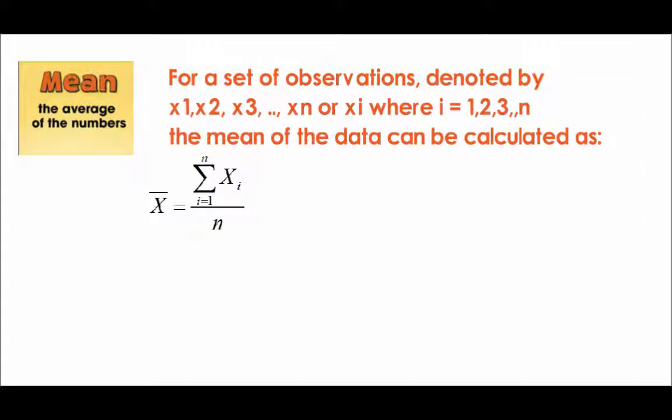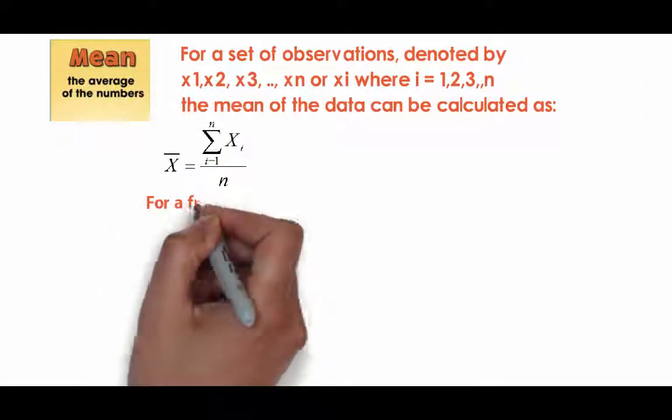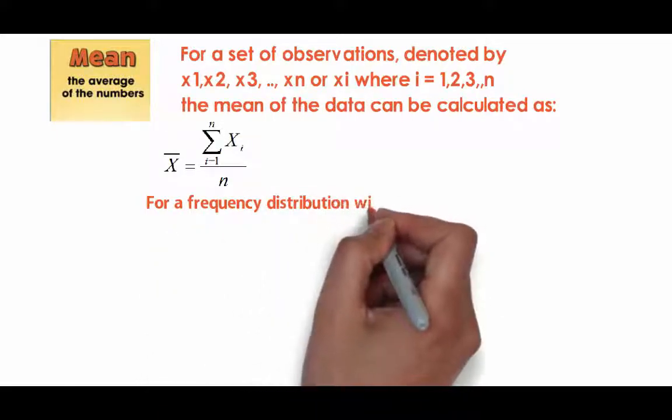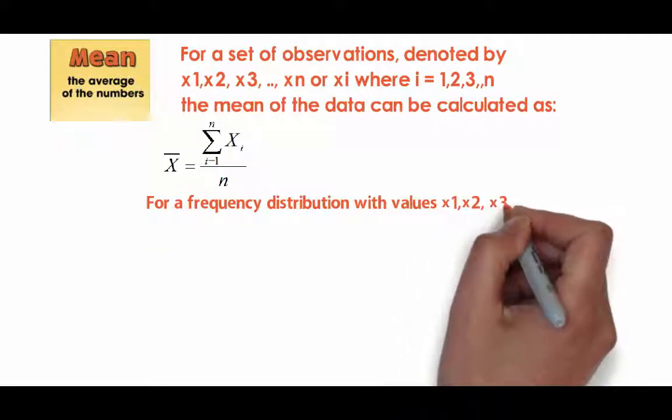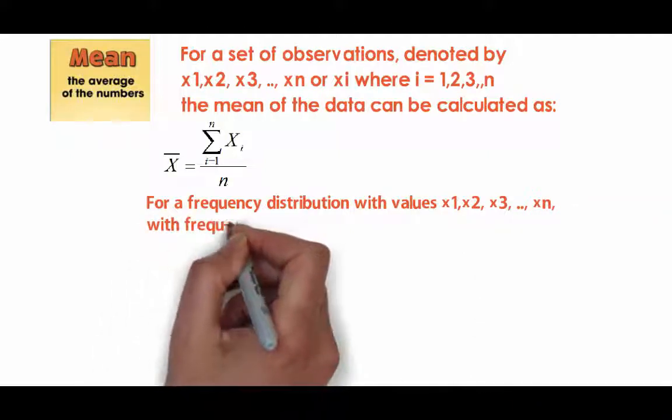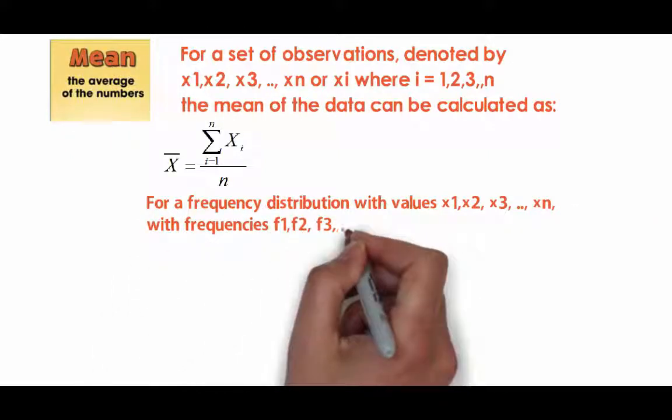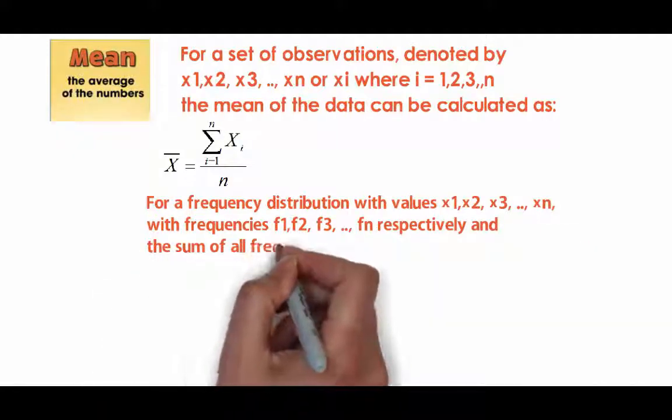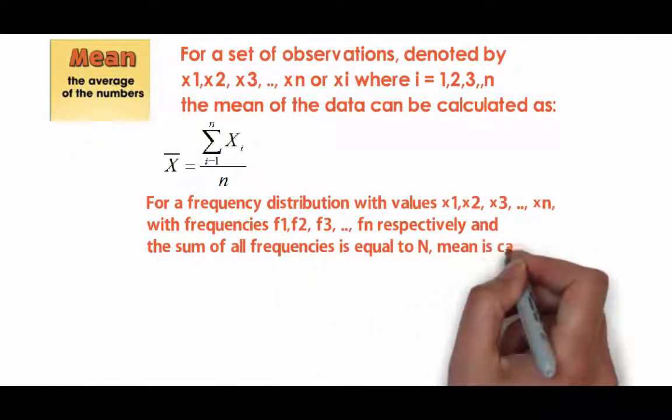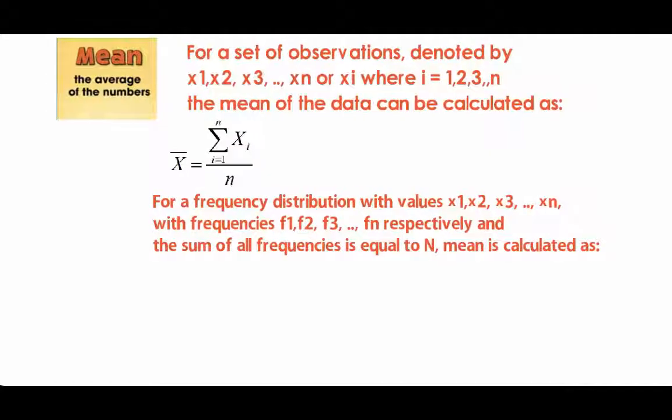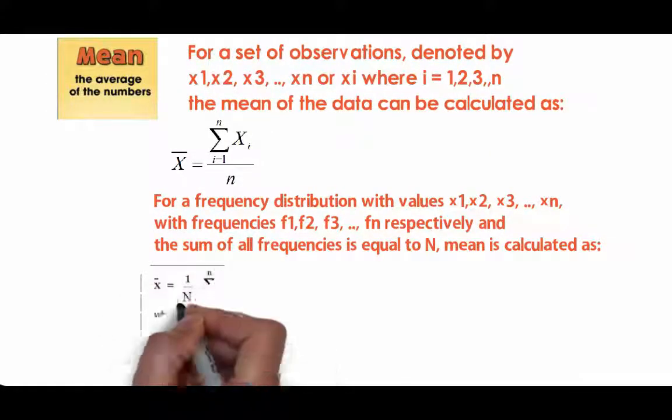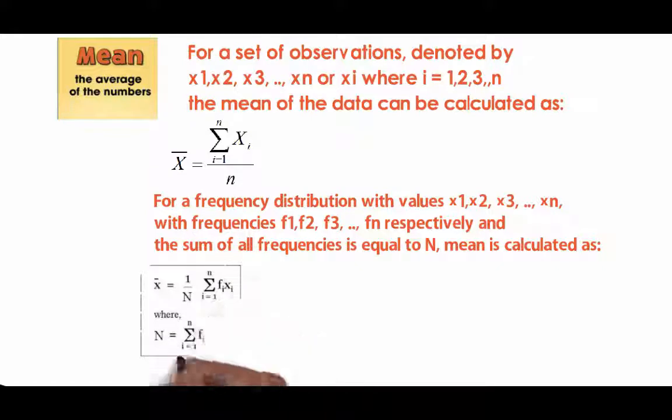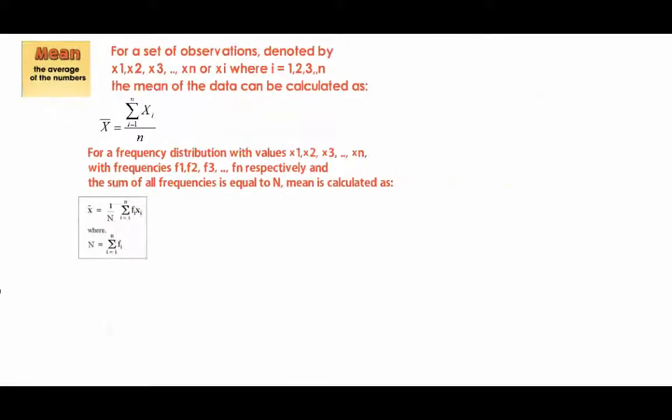For a data set which has frequency distribution with values x1, x2 and so on till xn having frequencies f1, f2, f3 and so on till fn respectively, and the sum of all frequencies is equal to capital N, x bar is equal to summation fi into xi where i goes from 1 to n divided by summation fi where i goes from 1 to n, which is also equal to capital N.